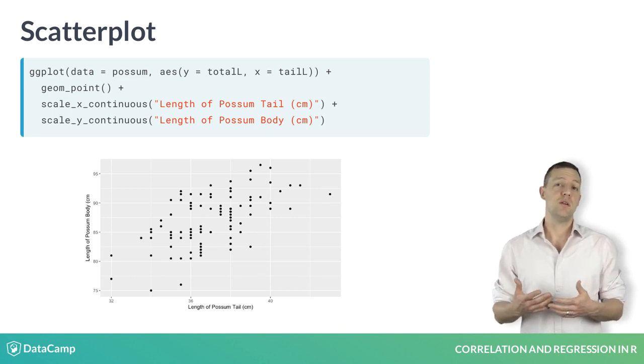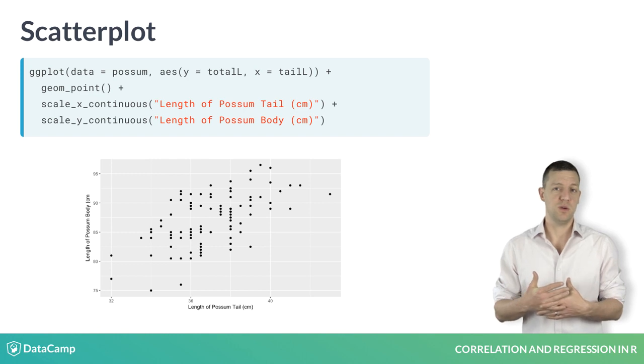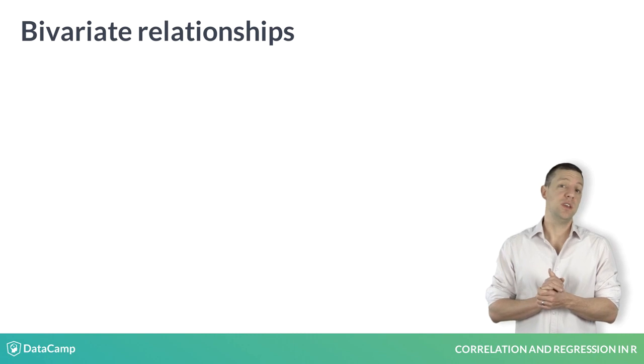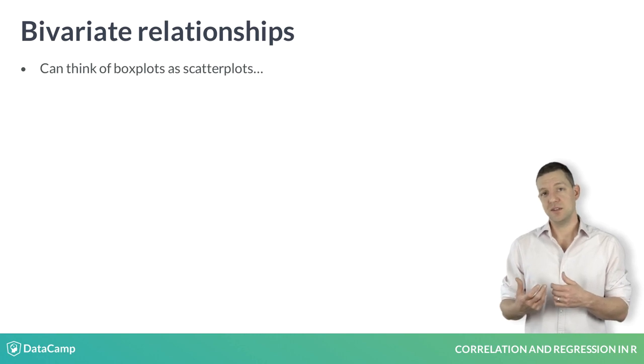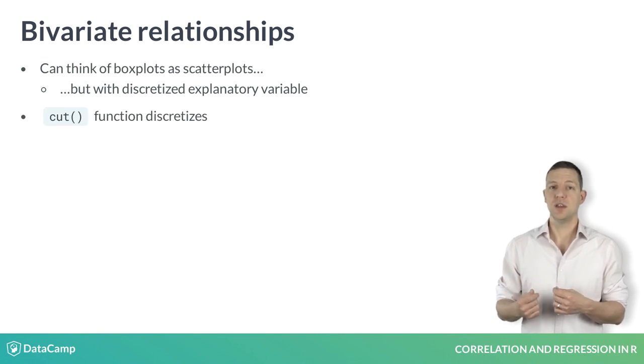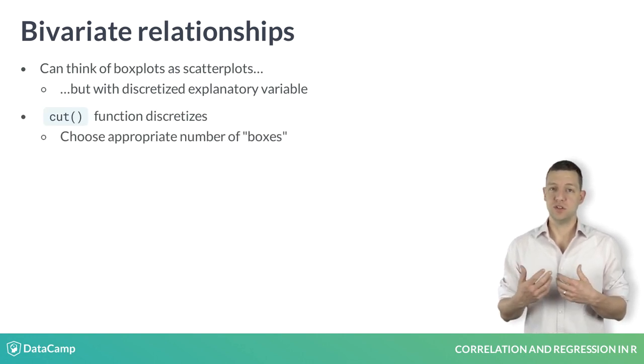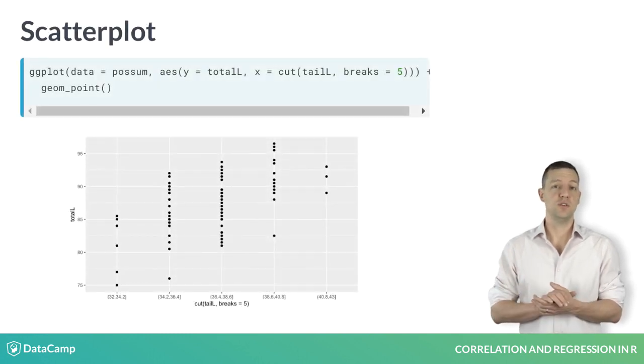Since you already know how a box plot can illustrate the relationship between a numerical response variable and a categorical explanatory variable, it may be helpful to think of a scatter plot as a generalization of side-by-side box plots. We can connect these ideas by discretizing our explanatory variable. This can be achieved in R using the cut function, which takes a numeric vector and chops it into discrete chunks.